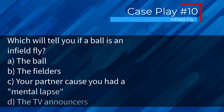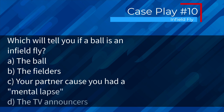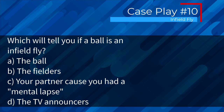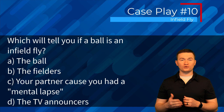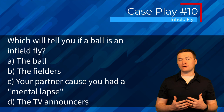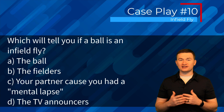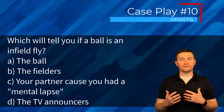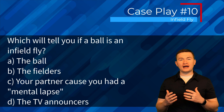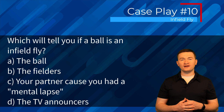Case play ten: what will tell you if a ball is an infield fly — the ball, the fielders, your partner, or the TV announcers? The correct answer is B, the fielders. The infielders are the only ones who can tell you whether they can catch a ball with ordinary effort. Looking at the ball doesn't indicate catchability. Watch the infielders: if they're squaring up to the plate or settling underneath it, it's likely ordinary effort. If they're turning and sprinting away, it probably won't be caught with ordinary effort and we would not have an infield fly.